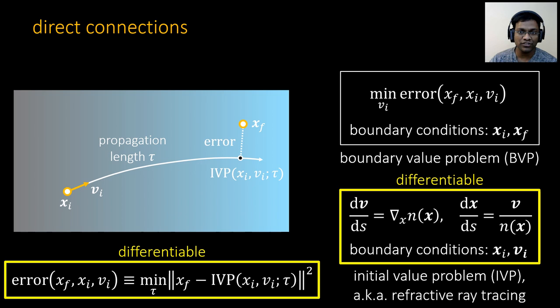Fortunately, both the error function and IVP are differentiable, and we can compute the derivative of the error with respect to vI analytically with little overhead. We use gradient descent techniques to compute the direct connections. For mathematical details, please refer to our paper.